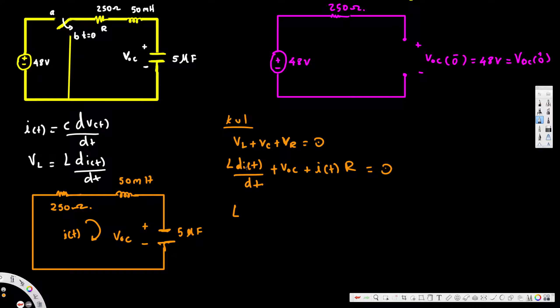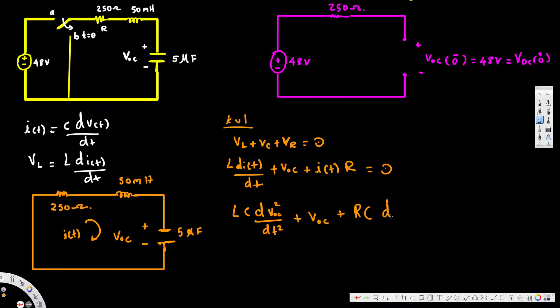For the inductor term, we replace i(t) with C·dVoc/dt, so di/dt becomes d²Voc/dt², giving us LC·d²Voc/dt². The VC term stays as Voc. For the resistor term, i(t) is replaced with C·dVoc/dt, giving us RC·dVoc/dt. So our second-order differential equation is: LC·d²Voc/dt² + Voc + RC·dVoc/dt = 0.